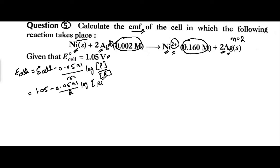Log of products - that is Ni²⁺ and Ag. The stoichiometric coefficients will go as powers. So we write 0.0591 upon 2 log, and substitute the Ni²⁺ value and Ag⁺ value.